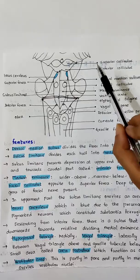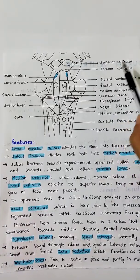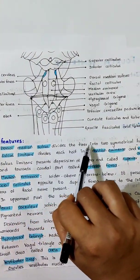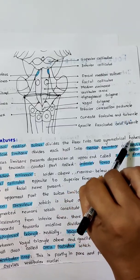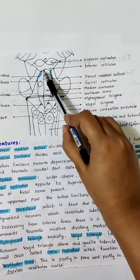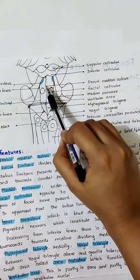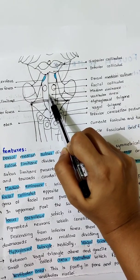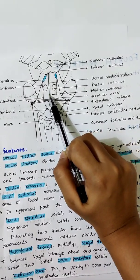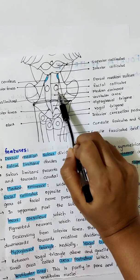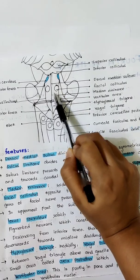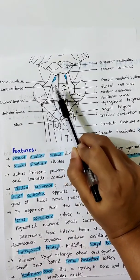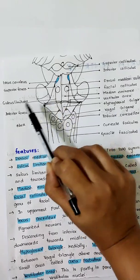Now let's look at the features. The dorsal median sulcus divides the floor into two symmetrical halves. The next important feature is the sulcus limitans.